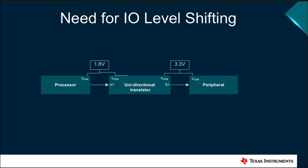Conversely, down-translation would be needed for the 3.3V to 1.8V direction. Simple unidirectional level-shifting such as this plays a critical role in today's systems in helping to interconnect core components of a system design.